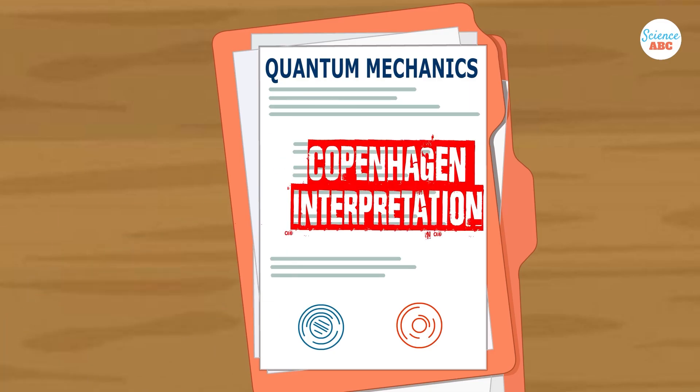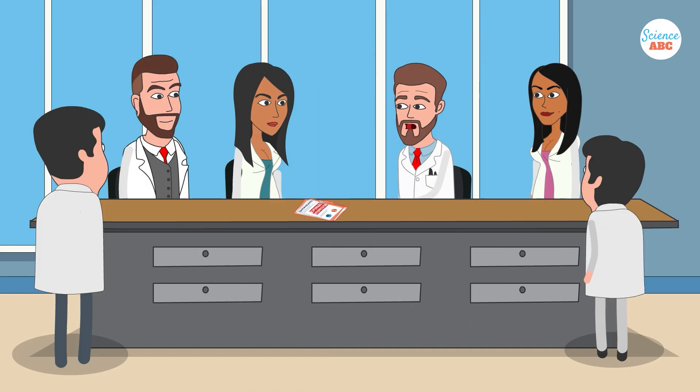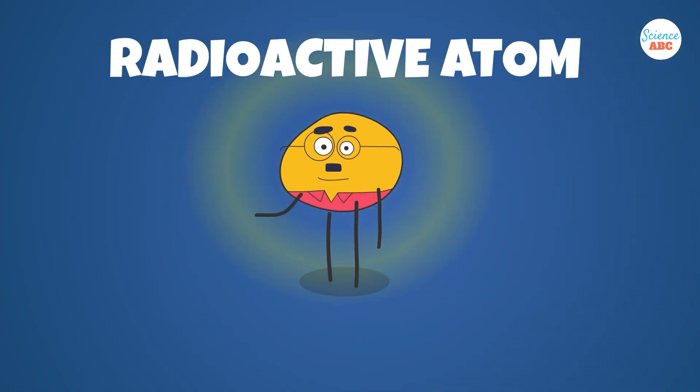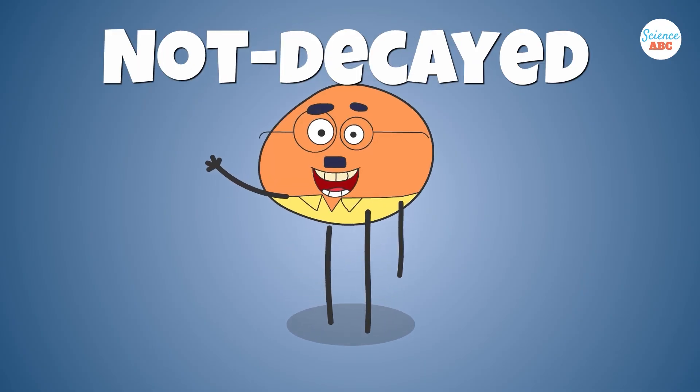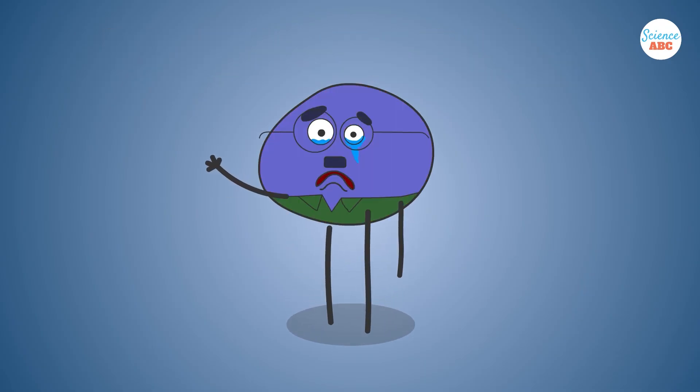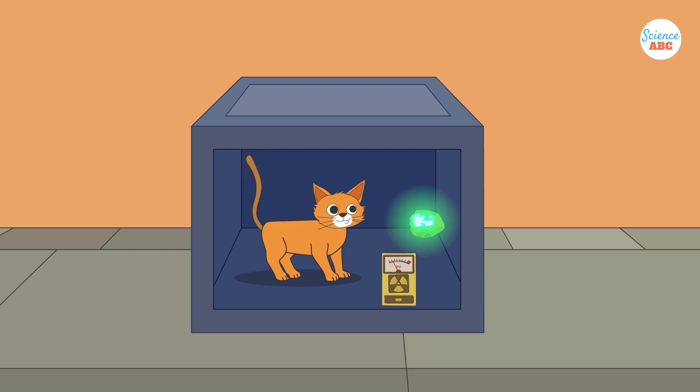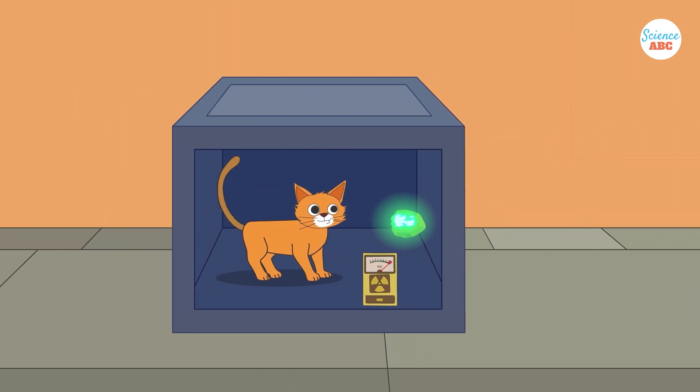At the time, the Copenhagen interpretation was the dominant view in quantum mechanics. According to this interpretation, the radioactive atom exists in a superposition, both decayed and not decayed, until someone observes it. Since the cat's fate is linked to the decay, it follows that the cat is also in a superposition, both alive and dead, until observed.